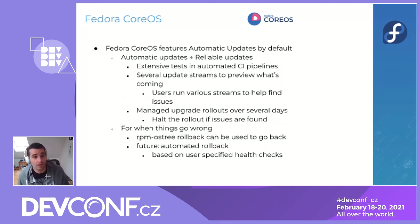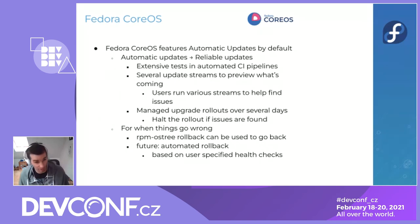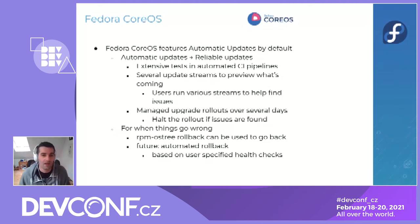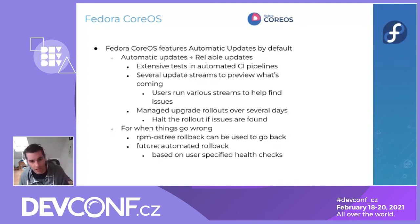Going back in more detail about some of those features: updates are something we care a lot about, because if we want people to use automated updates, we want them to be rock solid and not break anything. The development of Fedora CoreOS uses extensive CI pipelines and we're testing on different providers — for example, making sure Fedora CoreOS works well on AWS, Google Cloud, and on-premise clouds like OpenStack or libvirt for virtualization.